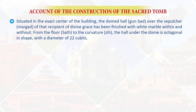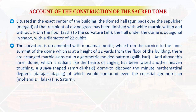From the floor to the curvature, the hall under the dome is octagonal in shape, with a diameter of 22 cubits. The curvature is ornamented with muqarnas motifs, while from the cornice to the inner summit of the dome — which is at a height of 32 yards from the floor of the building — there are arranged marble slabs cut in a geometric molded pattern. And above this inner dome, which is radiant like the hearts of angels, has been raised another heaven-touching, guava-shaped dome, to discover the minute mathematical degrees of which would confound even the celestial geometrician.